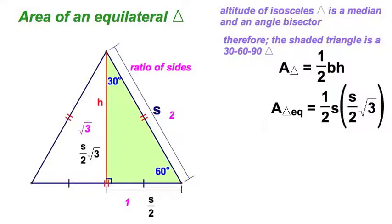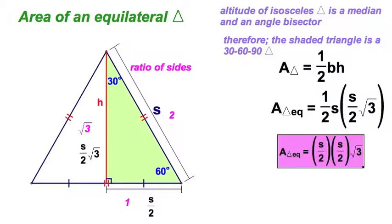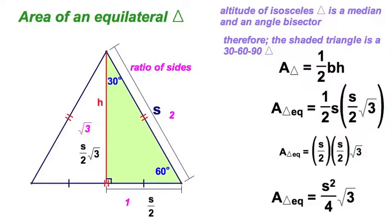And it looks like I can clean this up a little bit. I'll just rearrange here. I've got one-half s is s over 2. And I can multiply those s's. That's s squared. And there you go, my simplified formula, s squared over 4 radical 3.